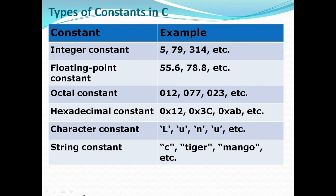The first type is integer constant, for example 5, 6, 3, 4, 2. The second type is floating point constant, for example 10.5. The third type is octal constant — octal uses the number system with digits 0 to 7. An octal constant always starts with 0, for example 0207 or 023.